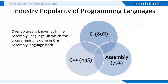C is not the only language used by embedded programmers. Experts also use C++ and assembly languages. The percentage of C used is approximately 80%, with C++ and assembly having 49% and 75% share respectively. It must be noted that the overlap area is known as inline assembly language, in which the programming is done in C and assembly language both. Hope you understood all that I discussed till now.